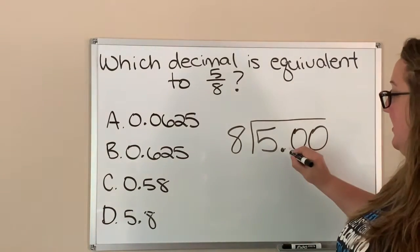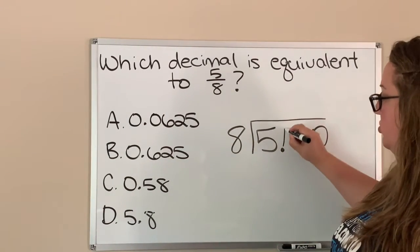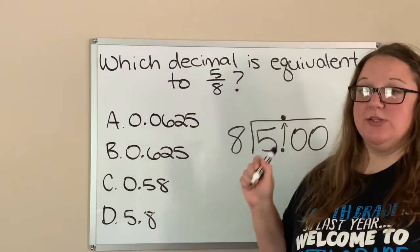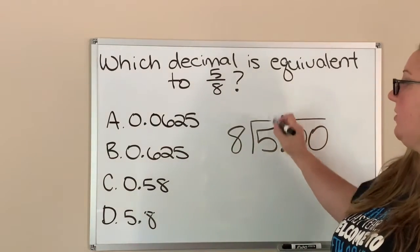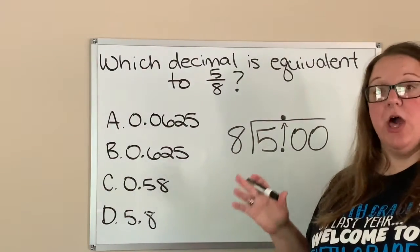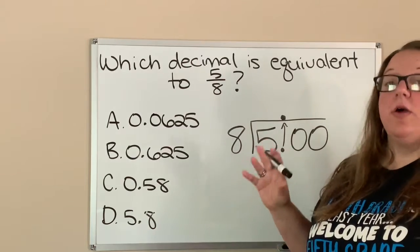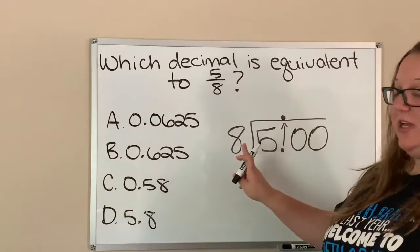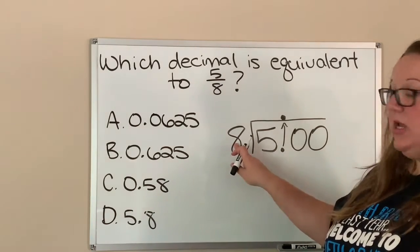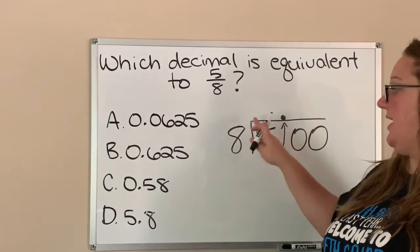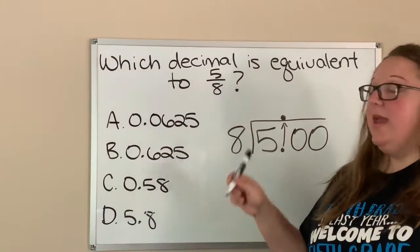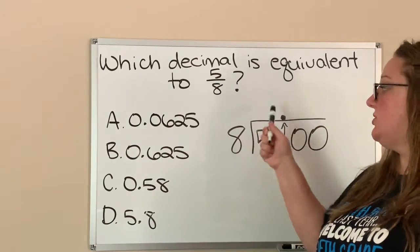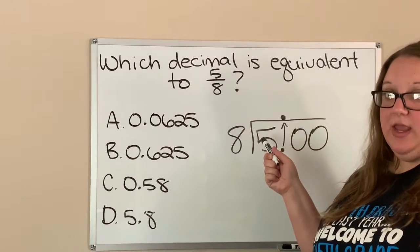This decimal right here we're going to bring straight up and put it right there, so when we start dividing we know where to line our numbers up and where our decimal is going to go in the answer. Now we just divide like we've always divided. The first thing we ask ourselves: can eight go into five? How many times can eight go into five?